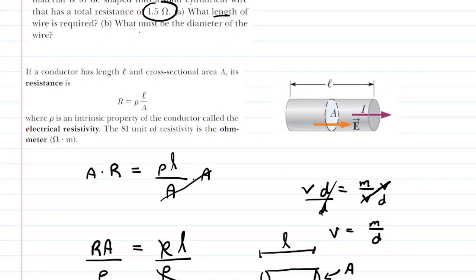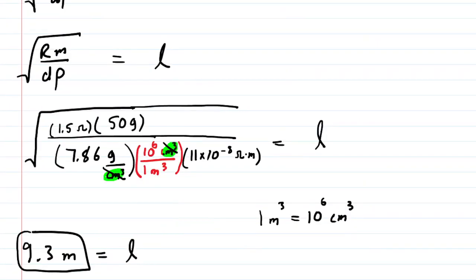In part B, it says, what must be the diameter of the wire? So now we're going to look for the diameter of that cylindrical wire. Now, of course, we know that because it's a cylindrical wire, the cross-sectional area would equal pi times the radius squared.